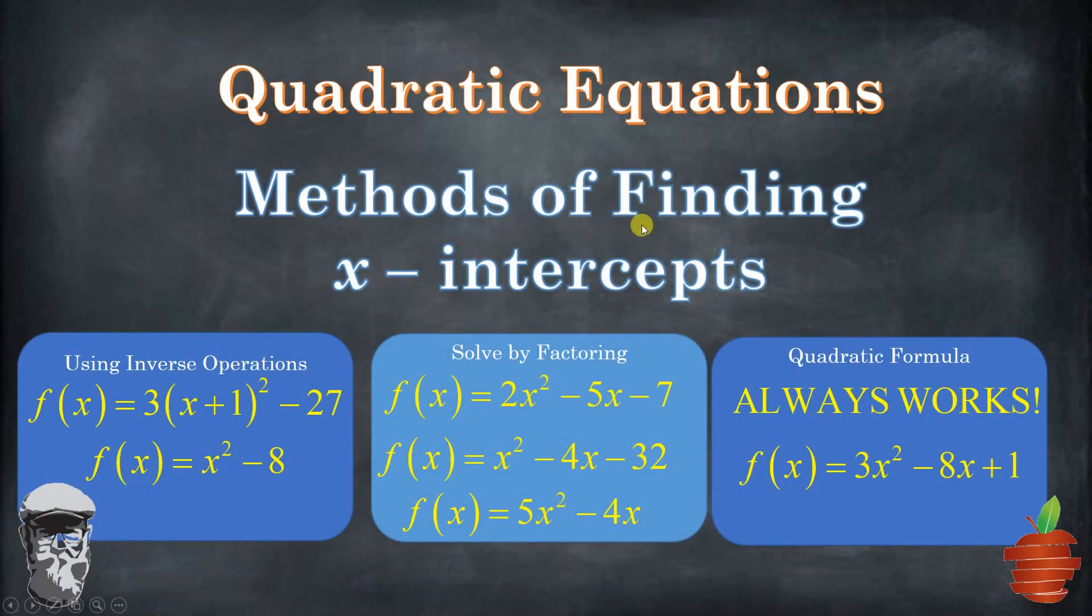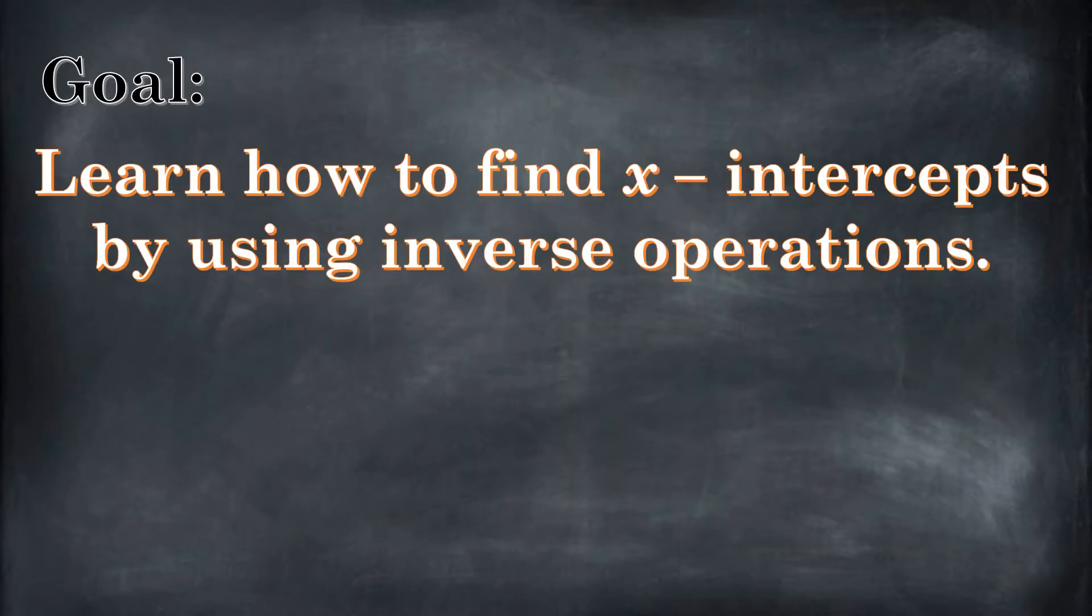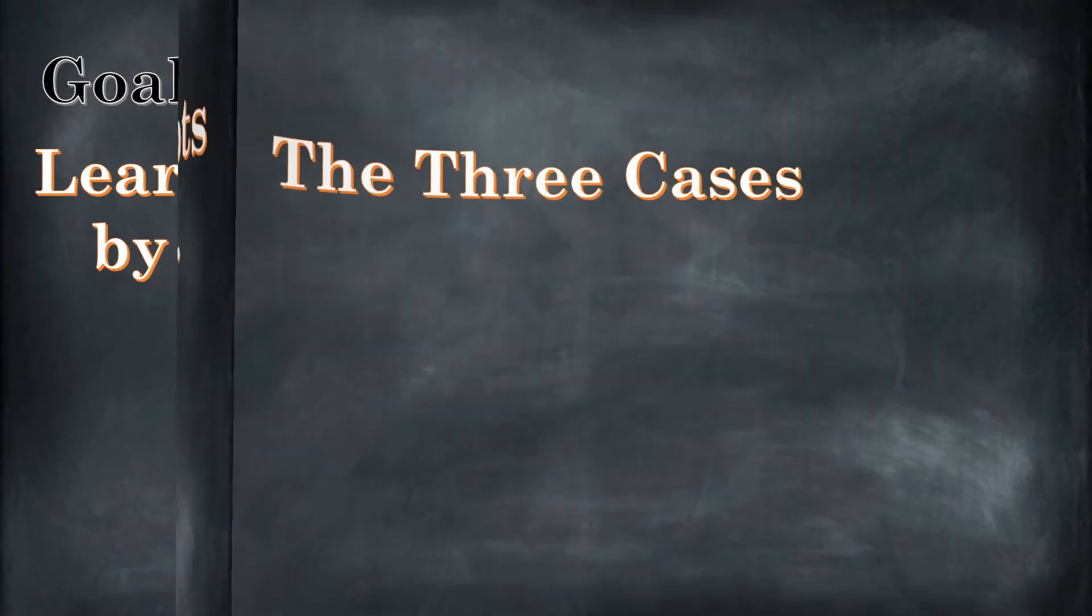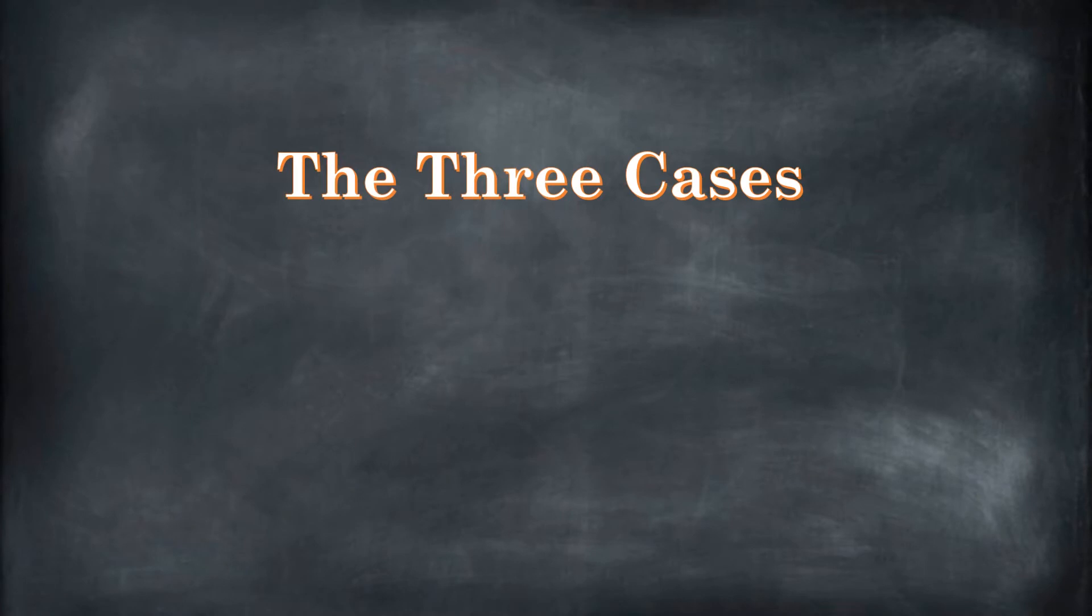Hello, and welcome to the Bearded Math Man's YouTube channel. Hey, in this video, this lesson, what we're going to be talking about is basically the three ways that you can find x-intercepts for a quadratic equation. And specifically, when and how you can use inverse operations, because it's by far the simplest one. We're going to be learning how to find the x-intercepts using inverse operations. We're going to briefly talk about all three cases, though.